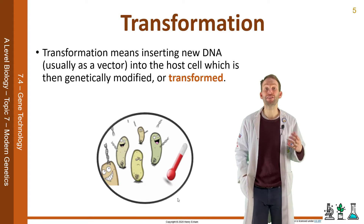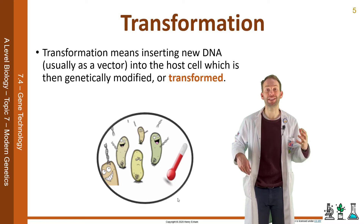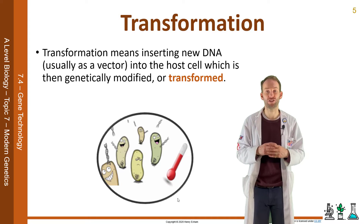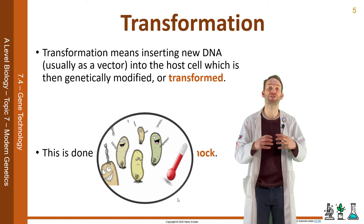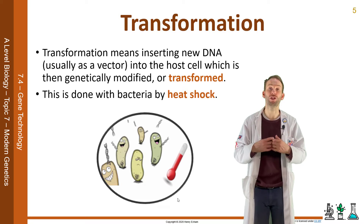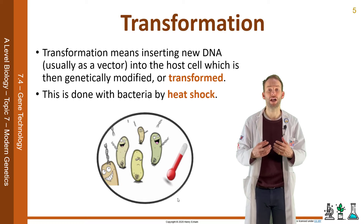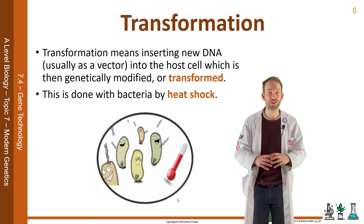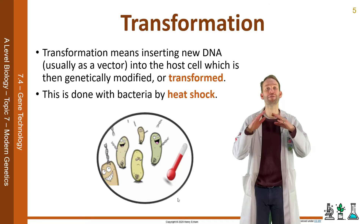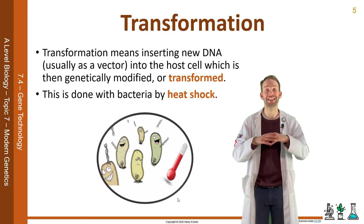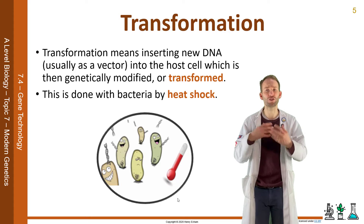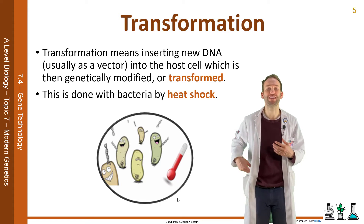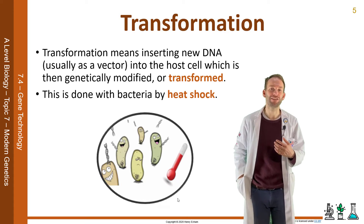This is done with bacteria and plasmids by heat shock. You take the bacteria, put them in solution with your recombinant plasmids, cool them to zero degrees, then raise them up to 40 degrees C for 90 seconds, and it causes the bacteria to take up these free engineered plasmids.